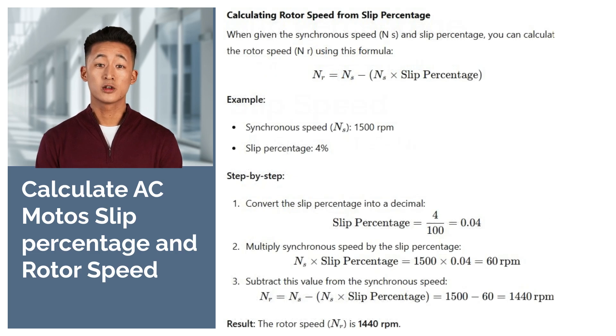Now, let's talk about how to calculate the rotor speed (nr) when you're given the synchronous speed (ns) and the slip percentage. This is a bit more challenging because you can't directly solve it using the slip formula. Here's a tip to make it easier.